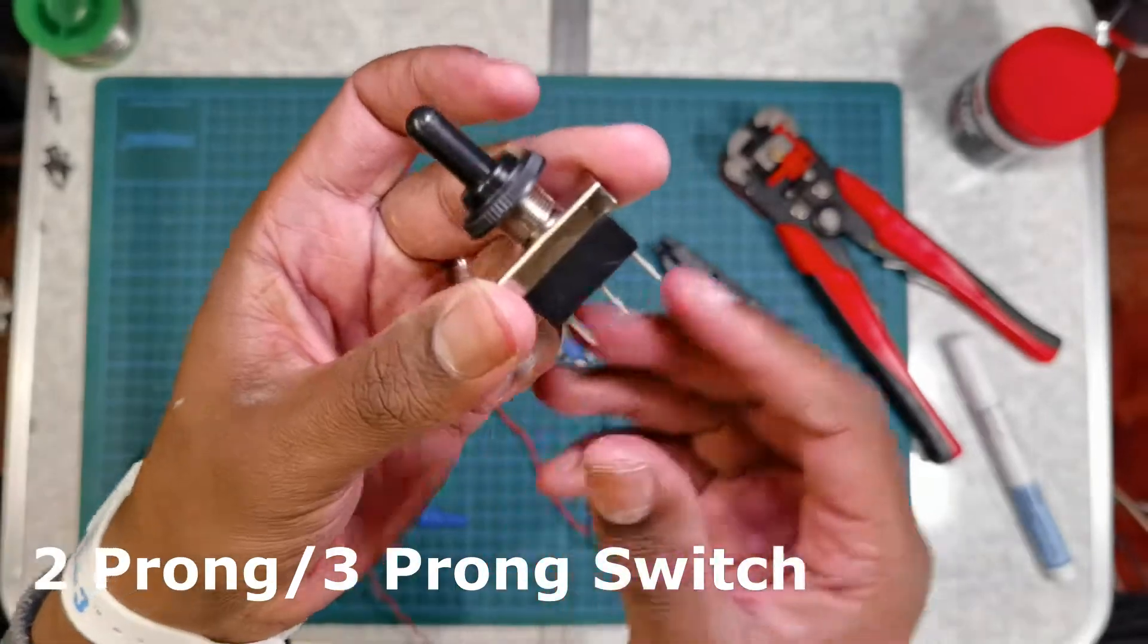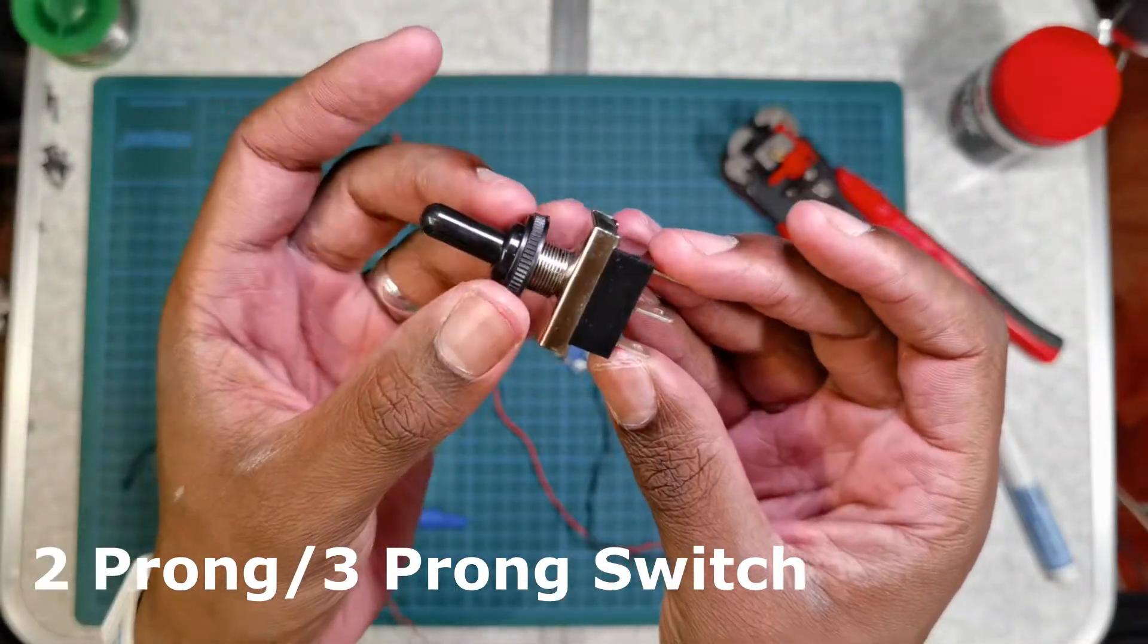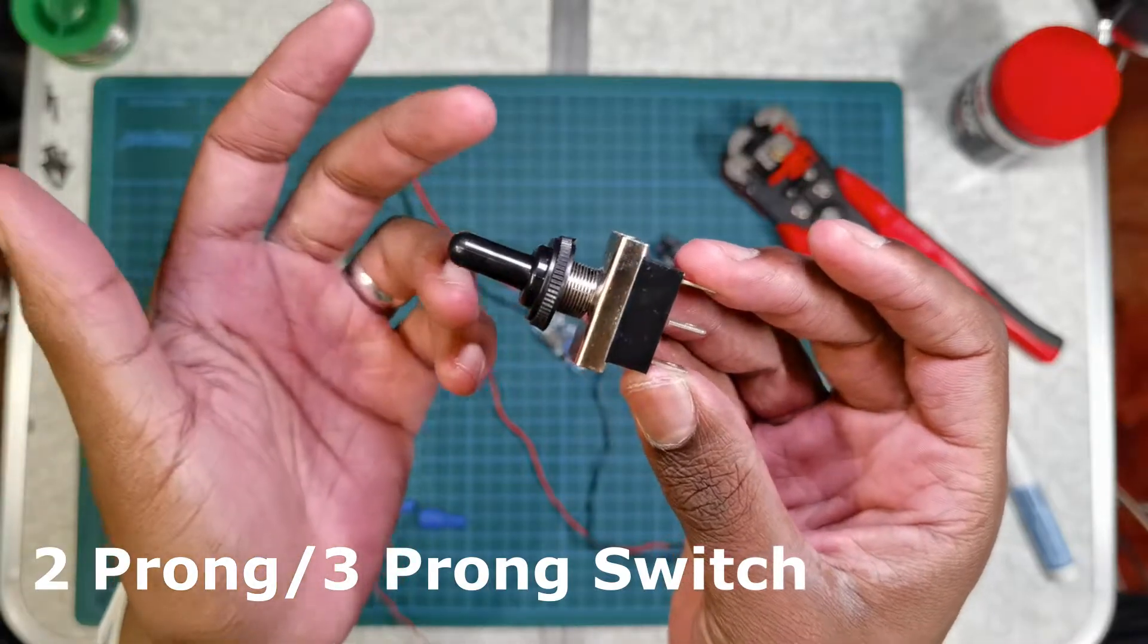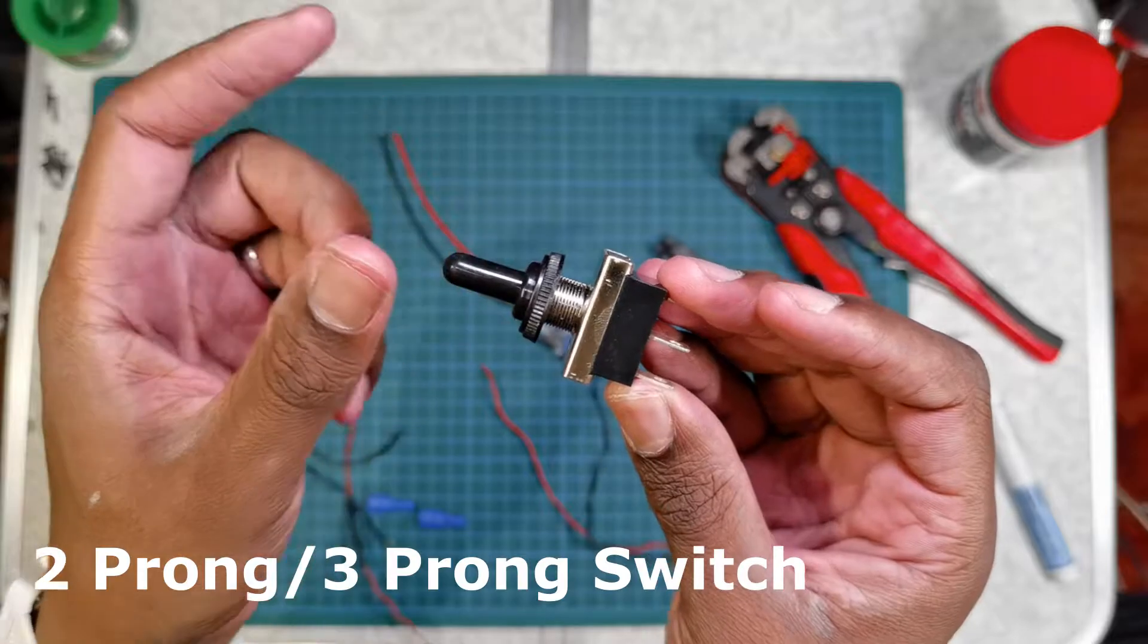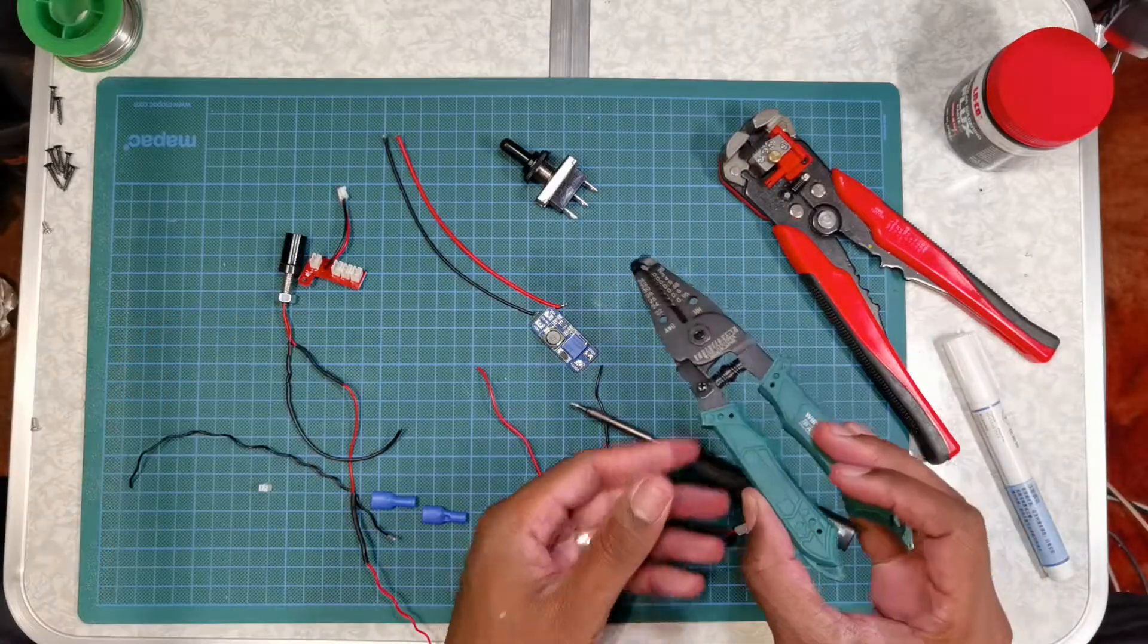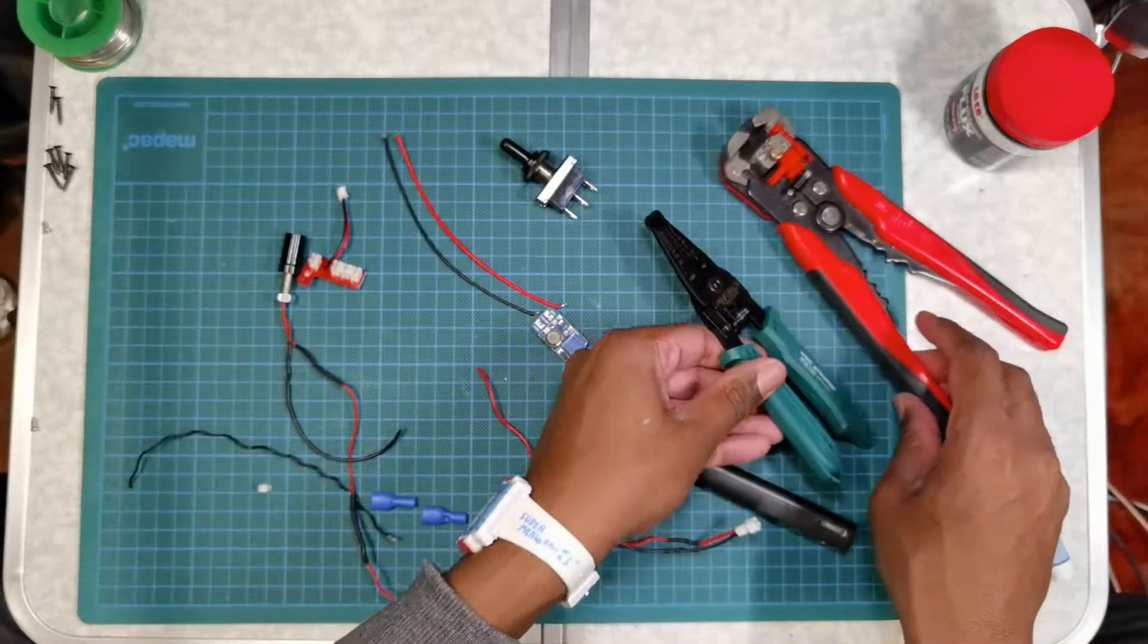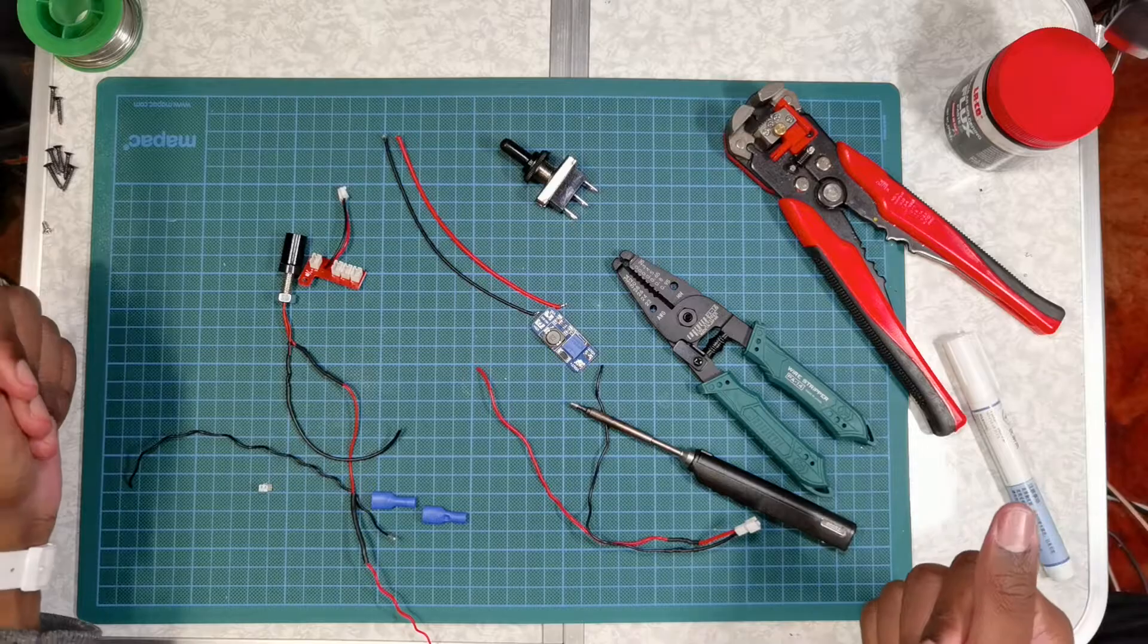Obviously you need a switch. I would recommend a two prong switch. I got a three prong switch. I think it's because it was the only type I could get my hands on at the time. A soldering iron, wire stripper, crimp tool and that's pretty much it.